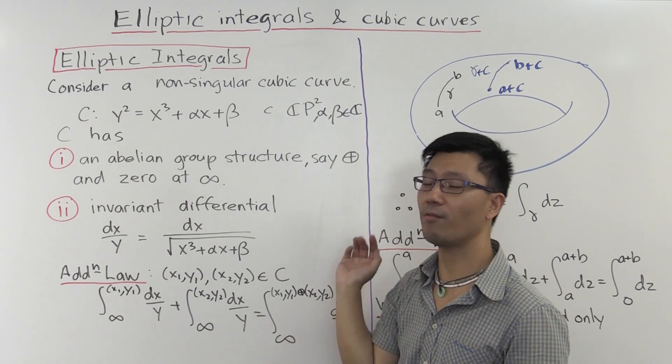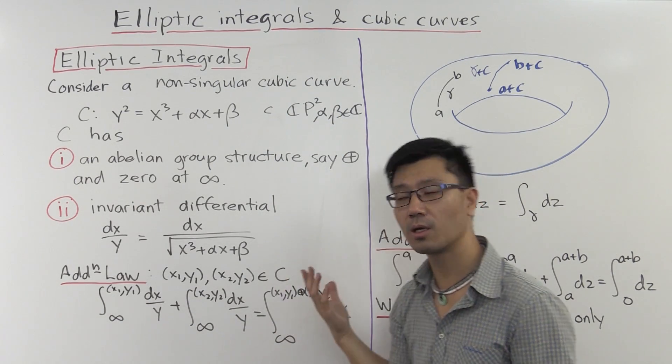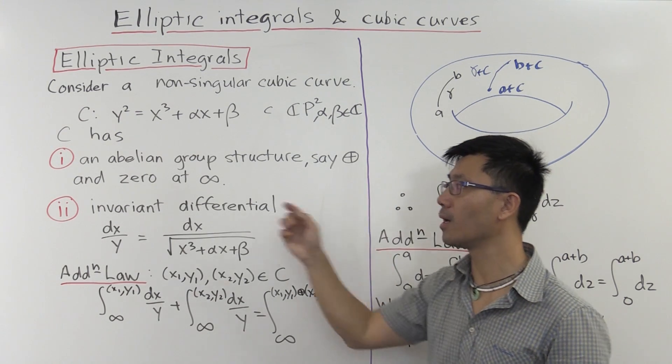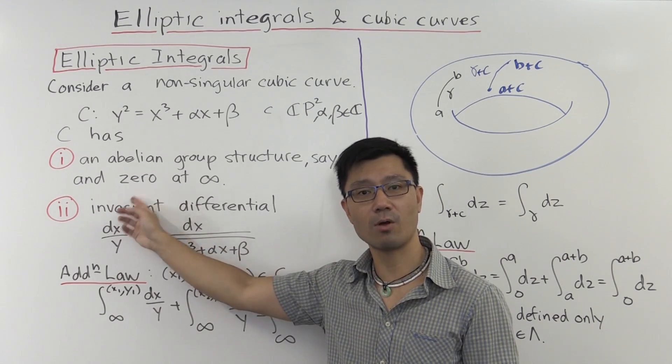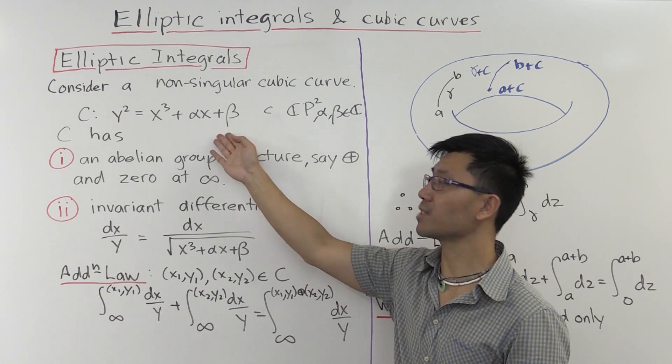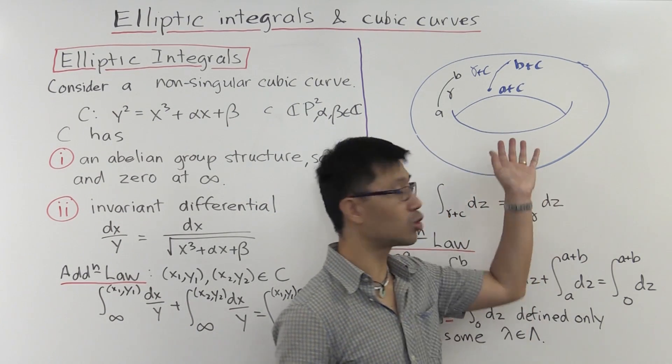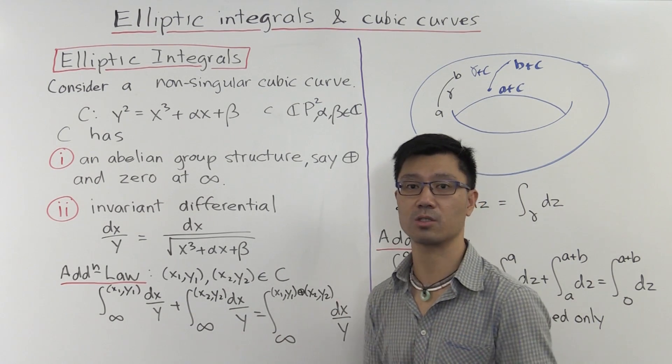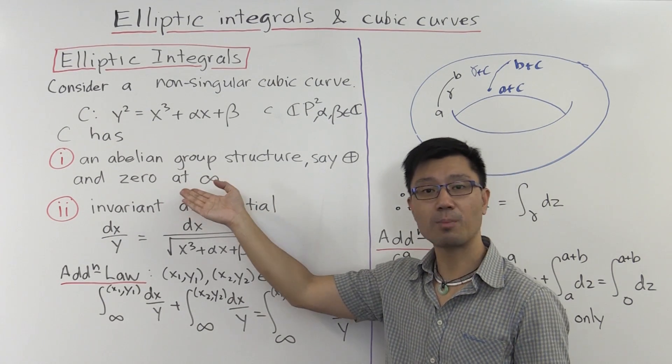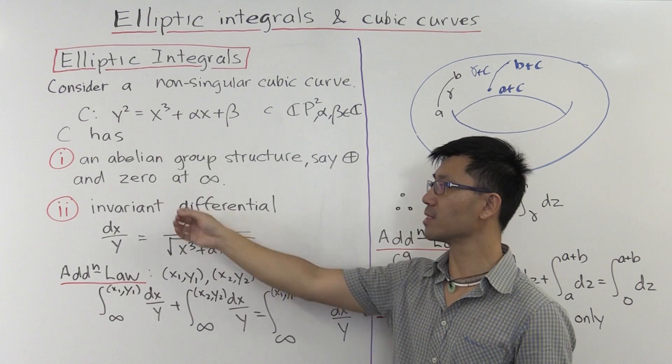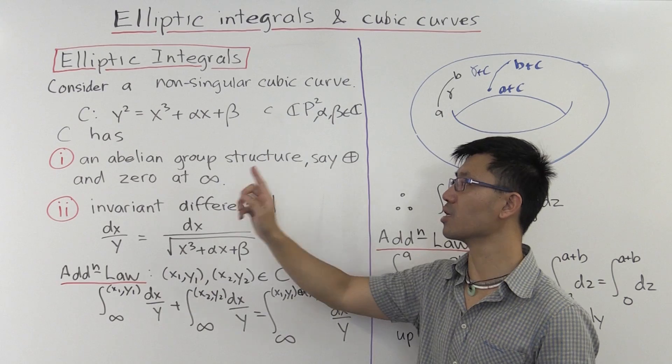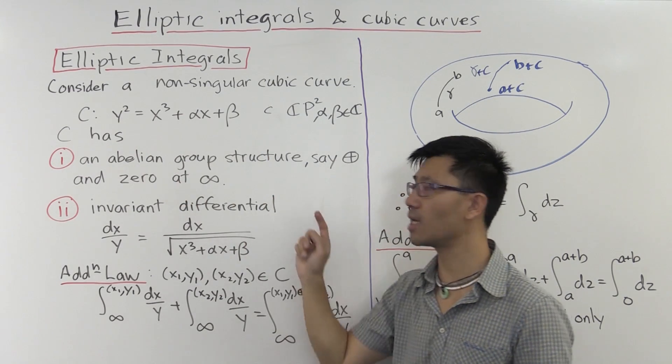Now, the important features of this cubic curve is that it has an abelian group structure. Let's suppose we denote it by this direct sum symbol here. And as such, it also has a zero. Now, to get this group structure, we saw that this was actually isomorphic to the two torus by using Weierstrass ℘-functions. And what does that Weierstrass ℘-function do? That Weierstrass ℘-function had poles at zero, which means it sends the zero to the point at infinity on this curve. So the zero on this cubic curve C is at infinity.